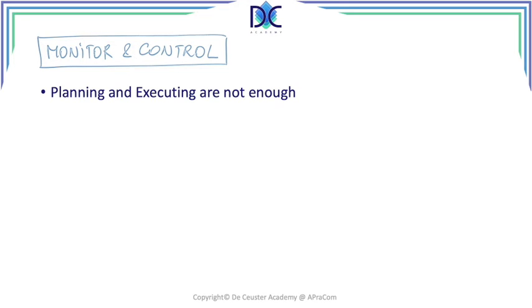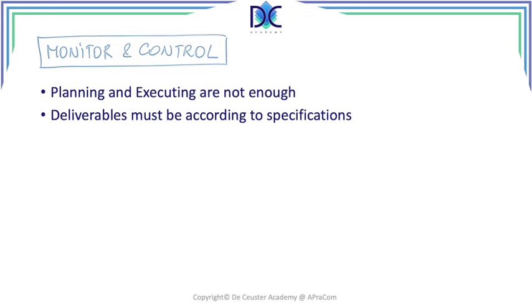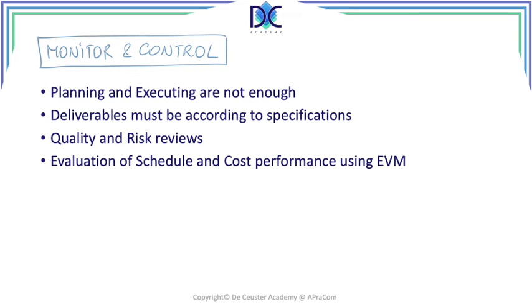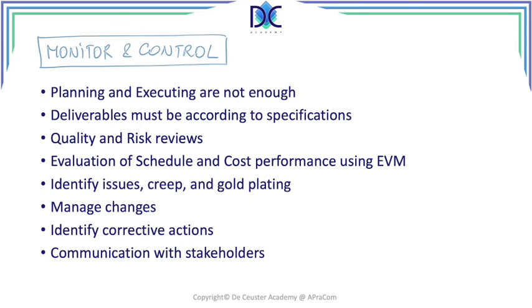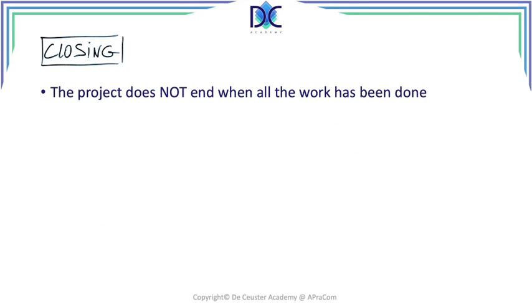In monitor and control, just looking at progress isn't enough — we have to ensure deliverables are created according to the plan and their specifications. We do quality and risk reviews, evaluate schedule and cost performance using earned value management, identify scope creep and gold plating, manage changes, identify corrective actions, and communicate extensively with stakeholders. As a project manager you have to identify creep because it can be very dangerous, and you have to avoid gold plating to reduce the cost of the project.